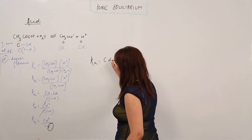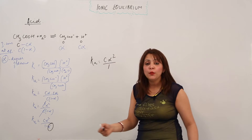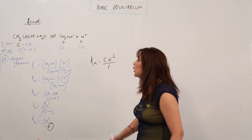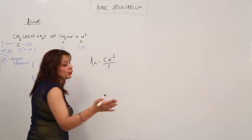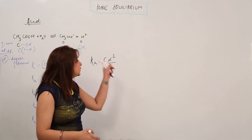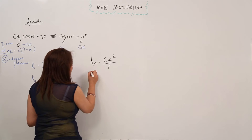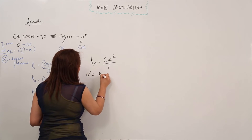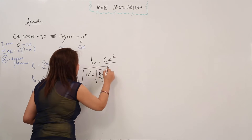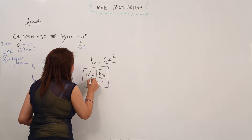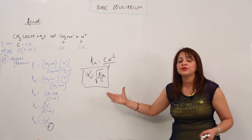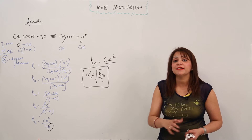After neglecting alpha, Ka equals C·alpha². So alpha equals the square root of Ka divided by C. This is the expression for the degree of dissociation for a weak acid. This is how you derive the expression for the degree of dissociation — and thus the strength — of a weak acid.